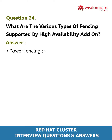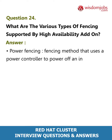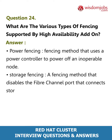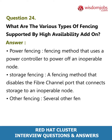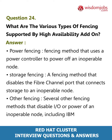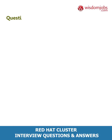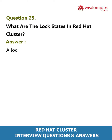Question 24: What are the various types of fencing supported by the High Availability Add-On? Answer: Power fencing — a fencing method that uses a power controller to power off an inoperable node. Storage fencing — a fencing method that disables the Fibre Channel port that connects storage to an inoperable node. Other fencing — several other fencing methods that disable I/O or power of an inoperable node, including IBM BladeCenter, PAP, DRAC, HP iLO, IPMI, IBM RSA2, and others.